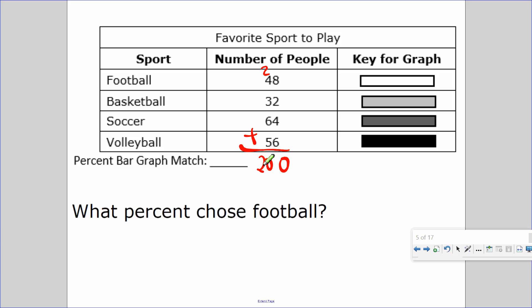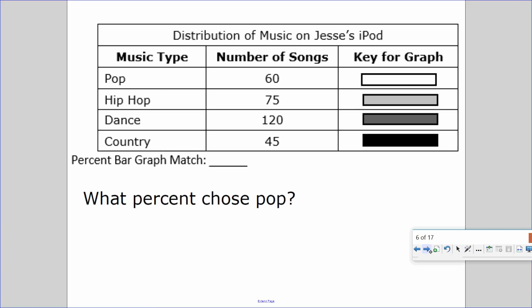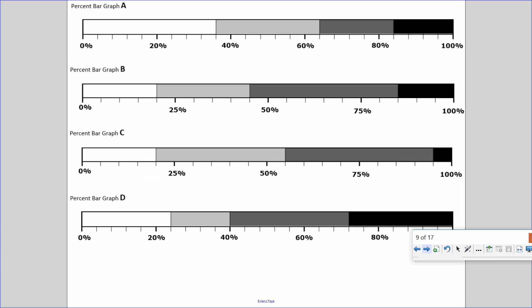So what percent chose football? So, again, this is a percent bar. There are 200 people they asked. Out of the 200 people, 48 of them chose football. A percent goes up to 100%. I'm going to make a prediction. I know it's going to be less than 50%, and less than 25%. What is the relationship from 200 to 100%? The relationship is divided by 2. So 24% chose football.